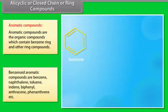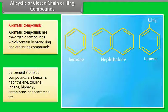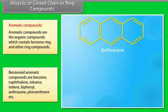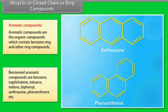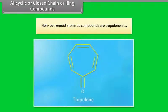Aromatic compounds are organic compounds which contain a benzene ring and other ring compounds. Benzenoid aromatic compounds include benzene, naphthalene, toluene, indene, biphenyl, anthracene, phenanthrene, etc. Non-benzenoid aromatic compounds include tropylone, etc.